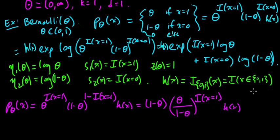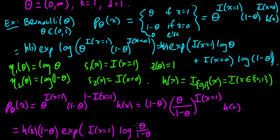Because if x is not equal to 0 or 1, then the whole thing is 0. If x equals 1, then we get theta. And 1 minus 1 is 0, so this just is 1. And if x is 0, then this is 0 in the exponent, so this is 1. This is 0, and we get 1 minus theta. So we can do that. And then, if we pull out a 1 minus theta from this, we get theta over 1 minus theta to the indicator that x equals 1 times our h of x here.